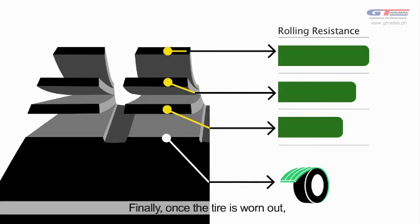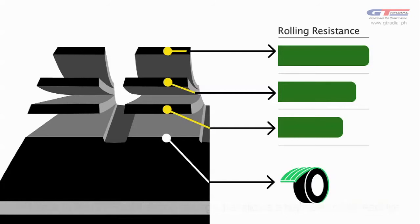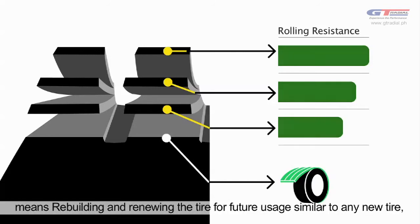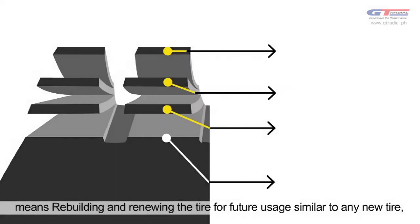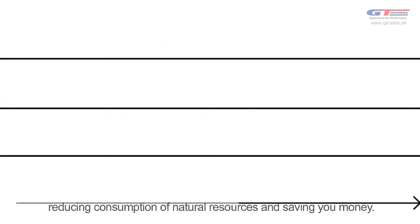Finally, once the tire is worn out, thanks to the GT Radial Strong Casings that allow a high level of retreading, means rebuilding and renewing the tire for future usage similar to any new tire, reducing consumption of natural resources and saving you money.